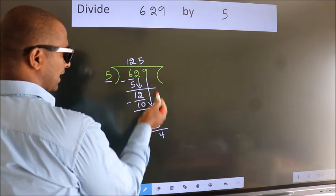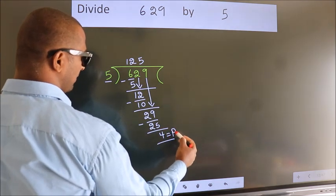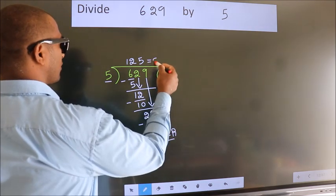No more numbers to bring it down. So, we stop here. This is our remainder. This is our quotient.